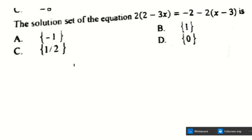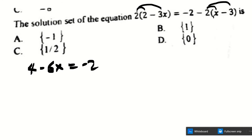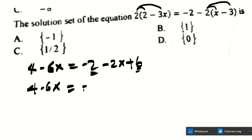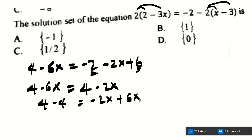The next question is a linear equation. Expanding the brackets: 2 times (2 minus 3x) gives 4 minus 6x, and the right side expands to negative 2x plus 6. Collecting terms: 4 minus 6x equals 4 minus 2x. Bringing constants and variables together: 4 minus 4 equals negative 2x plus 6x, so 0 equals 4x, giving x equals 0. The answer is D.